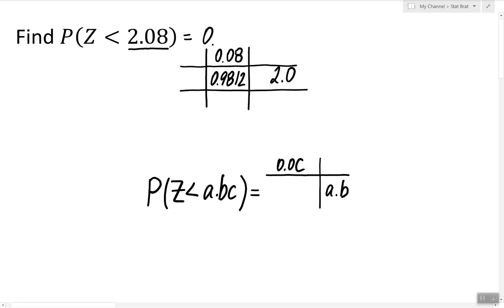you'll see the value 0.9812 written in there. And this is the answer to our question. So the probability of z being less than 2.08 is 0.9812.